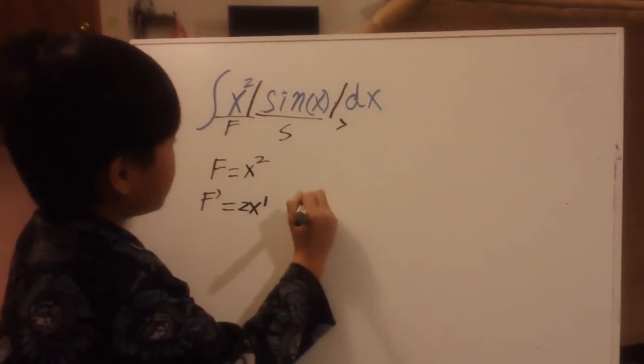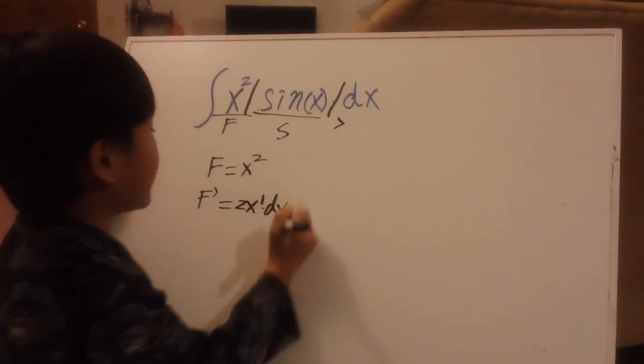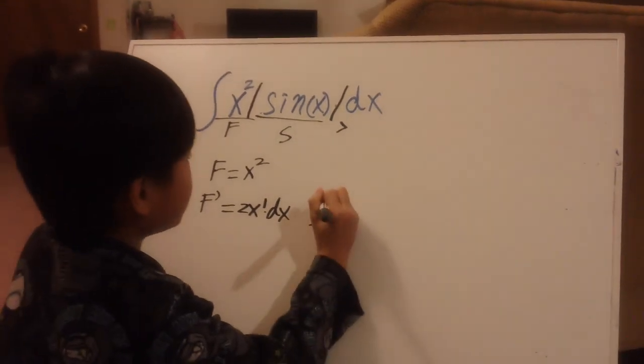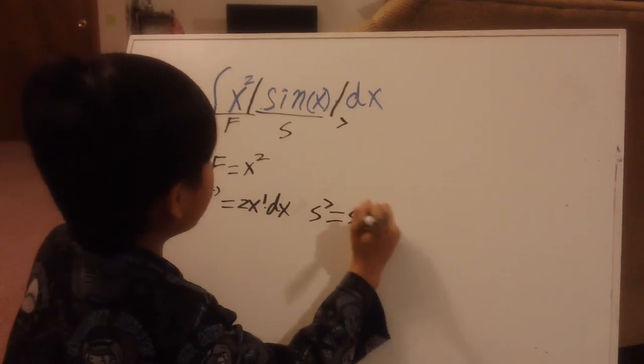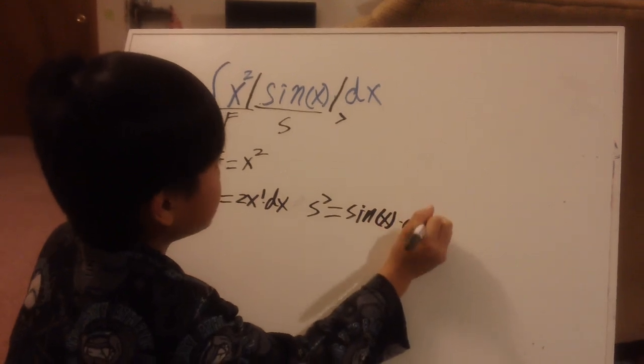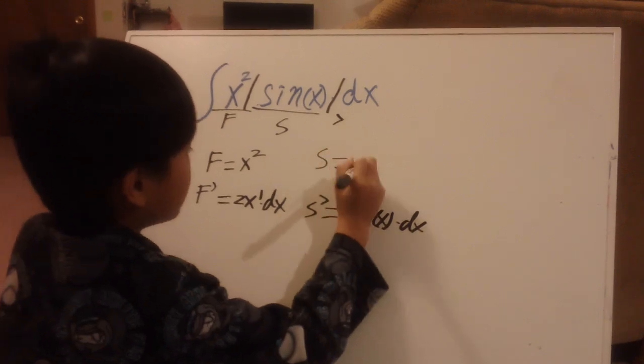And then you put dx. Then the S, go down. And you copy that, sin x, which is sine. And then when sine goes up, it is minus cos.